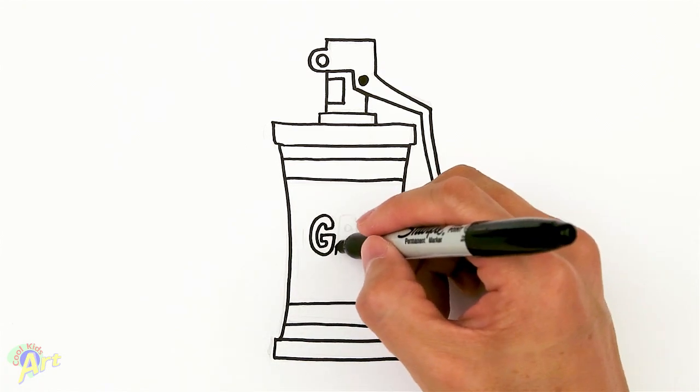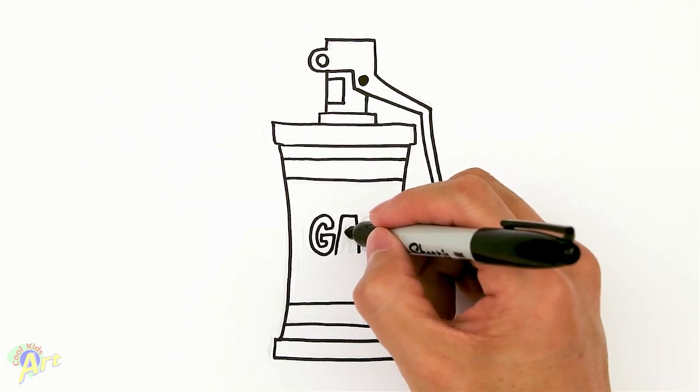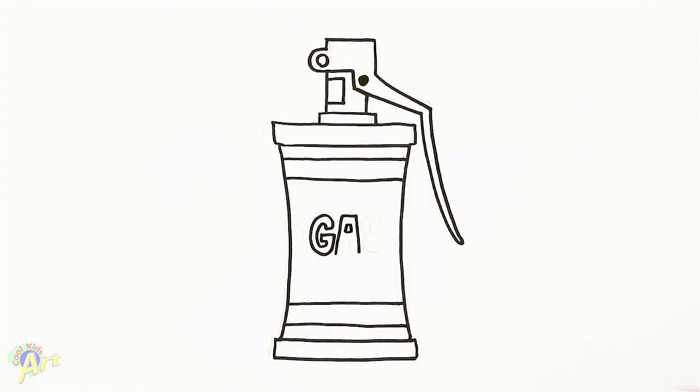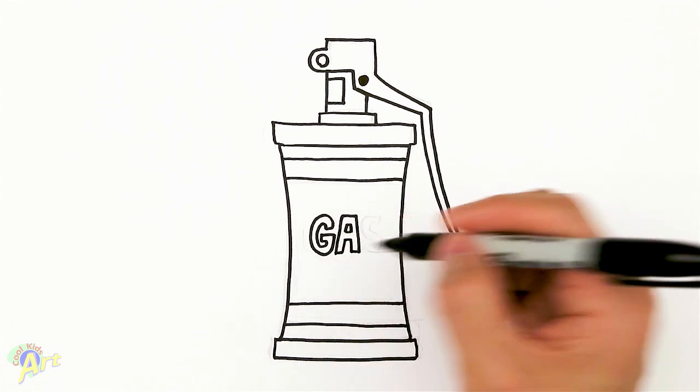And then for the A, just draw like a little bracket like this in the middle. Draw that and then here, this one's easy. Come in and then go up. Come back down.